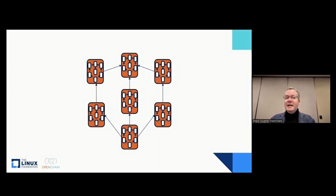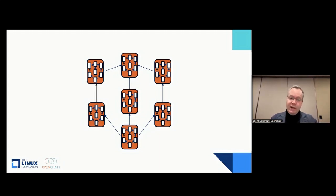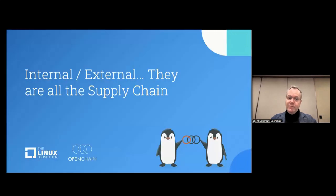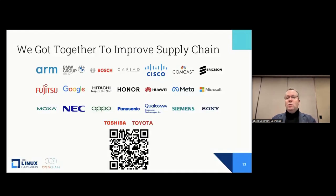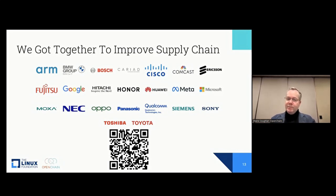In short, everything is a supply chain — or we just think of it as one giant supply chain that needs to be managed. With that mental model, that's where we come in: a bunch of diverse companies getting together and asking, if we need to manage all of this, if we need to improve the supply chain — internal and external — what is it that we need to do?